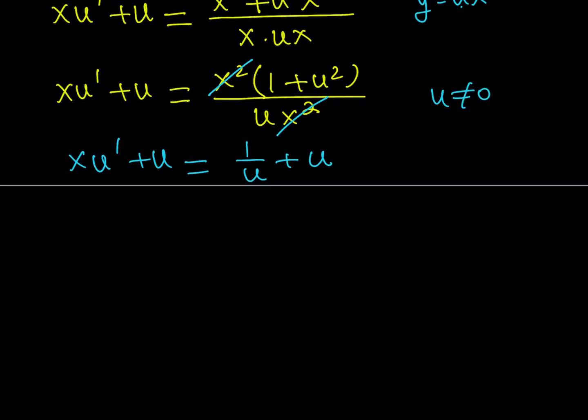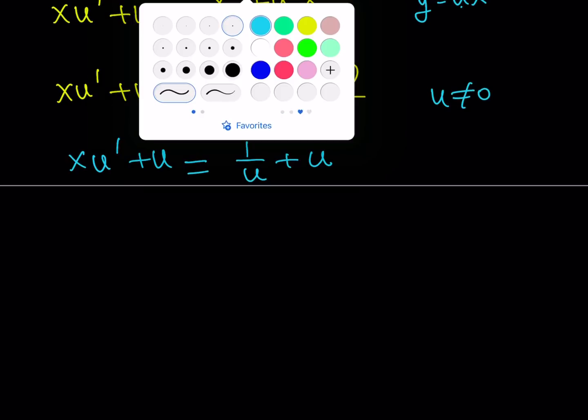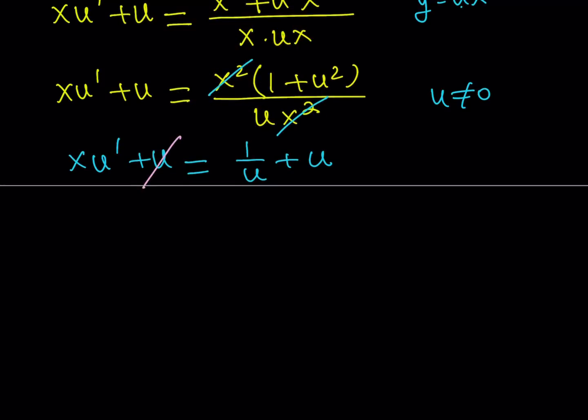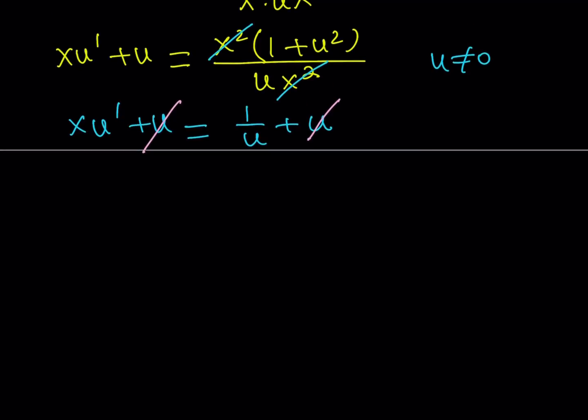Since u does not equal 0. Now, this is pretty nice because we can get rid of the u here. We can subtract u from both sides. And we get a simpler equation. Now, since u is a function of x, let's go ahead and write it as du/dx. And on the right-hand side, we have 1/u.